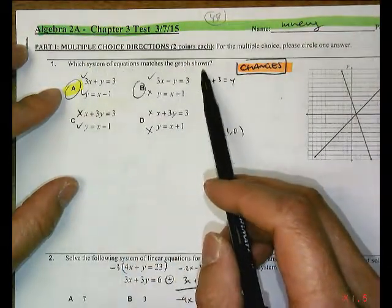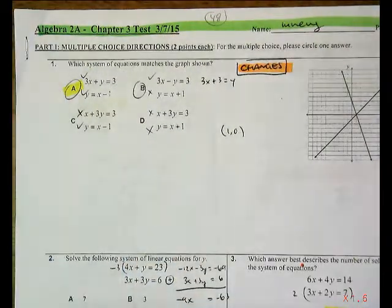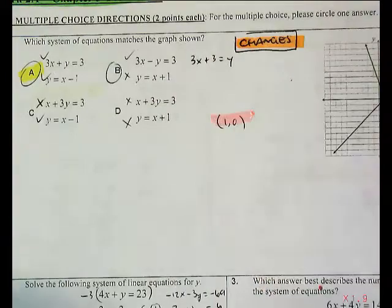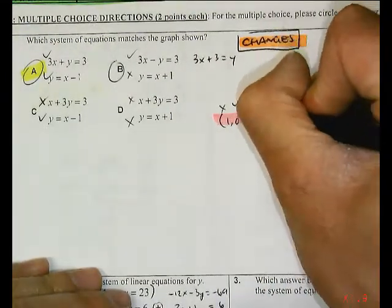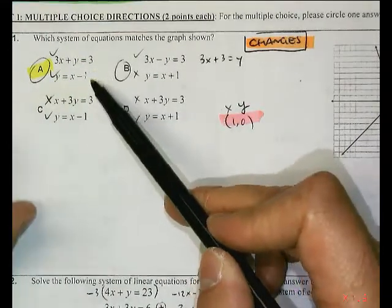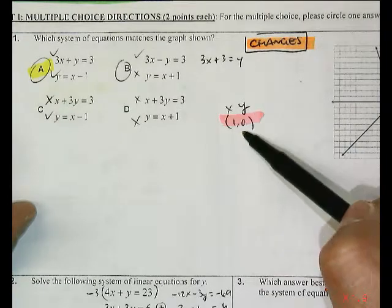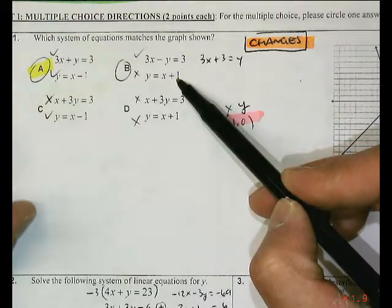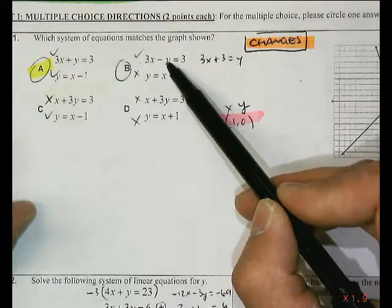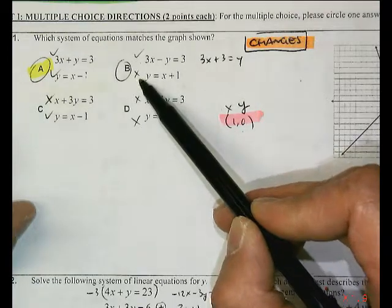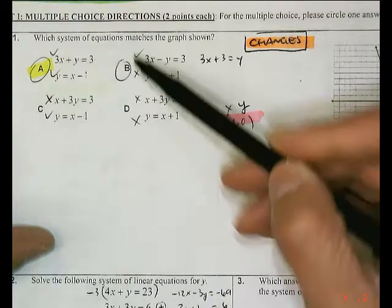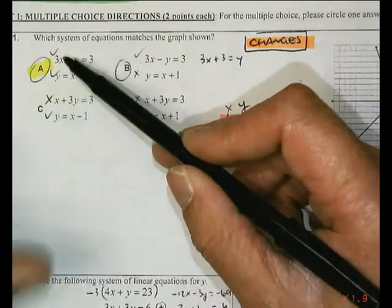Which system equation matches the graph shown? You're looking for the point of intersection here. Point of intersection there is (1, 0). So you're just using your x value as 1 and your y value as 0. You can either change all the equations into slope-intercept form, or you can just take the ordered pair and substitute into each of the equations. Notice my checks verify that it is true, such as 3 times 1 is 3, minus 0, 3 minus 0 is 3, but the x means it's false. 1 plus 1 is 2, 2 is not equal to 0. I would recommend going through each of the problems, and the only one that has both true is A.